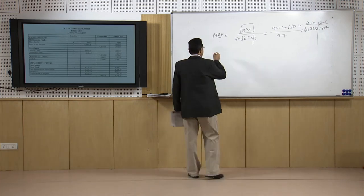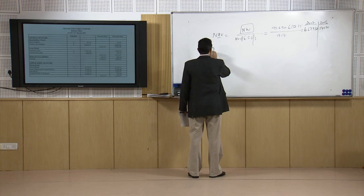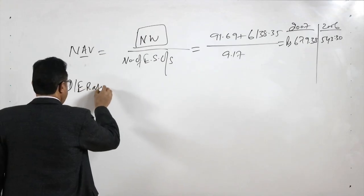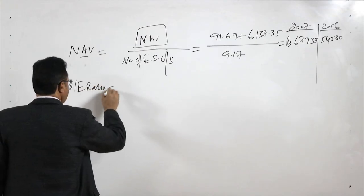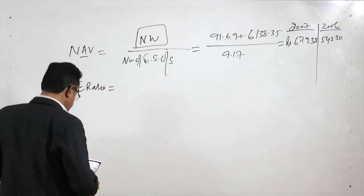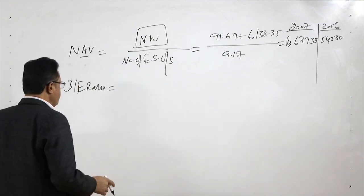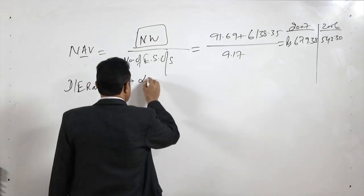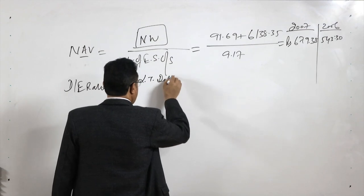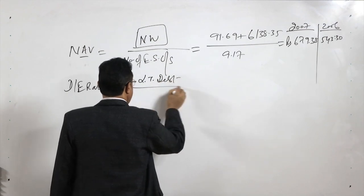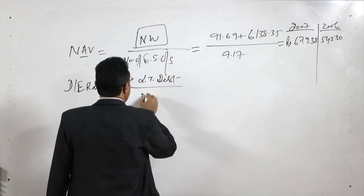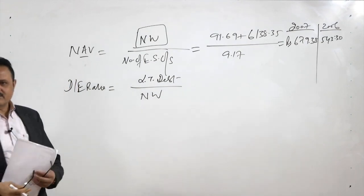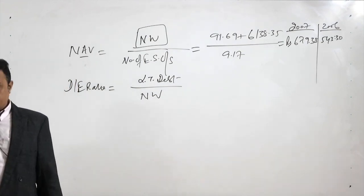The next ratio in this category is the DE ratio, that is the debt equity ratio. For calculating this ratio, we take the long-term debt divided by the net worth.